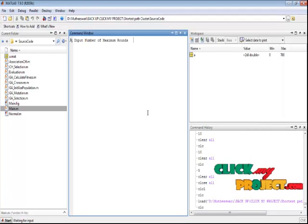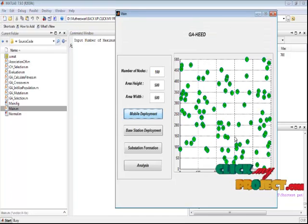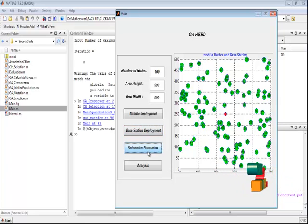Here we need to enter the maximum rounds, that is maximum iteration. And this is the deployment of sensors. And by pressing the base station deployment, we place the deployment, that is base station, at the center of the coverage area.